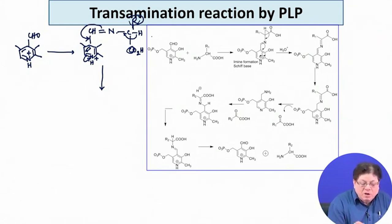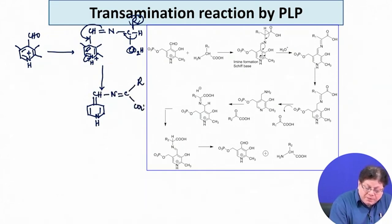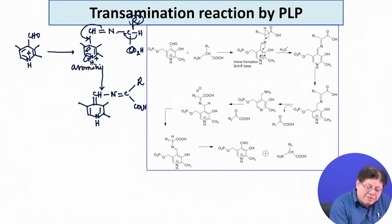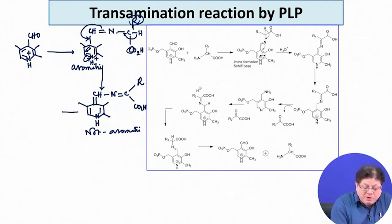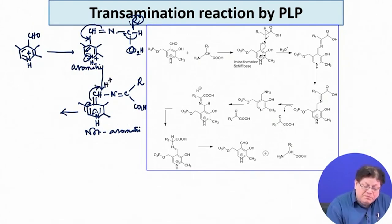If this hydrogen is lost, what you get is a system with N=CH, then a double bond, and then N=C with R and CO₂H — this system has paid the price of acting as an electron sink by losing aromaticity. Now, to regain aromaticity, the electrons flow in the opposite direction — the nitrogen lone pair comes back, this bond shifts, and there are two options: the hydrogen can be taken up at this carbon, or the process can go further.